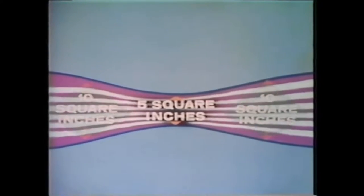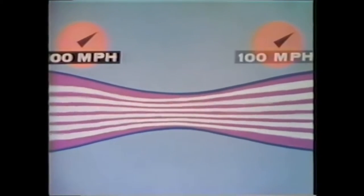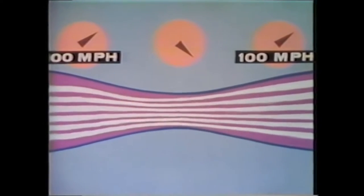Now, if we direct smoke lines through the device, its pattern will show that something happens to the air where it goes through the narrowed part. What we find is that when the airspeed is 100 miles an hour at the entrance of the device, it is also 100 miles an hour at the exit. Yet, at the same time, the speed at the narrow part is considerably higher. It can easily be understood, therefore, that the air increases in speed as it passes through the smaller openings.